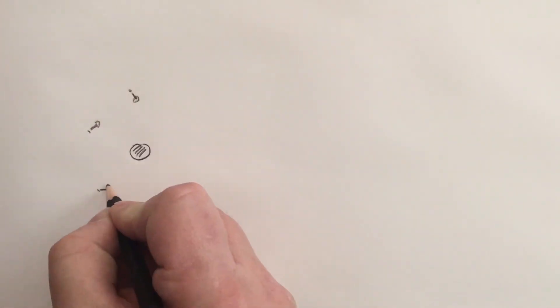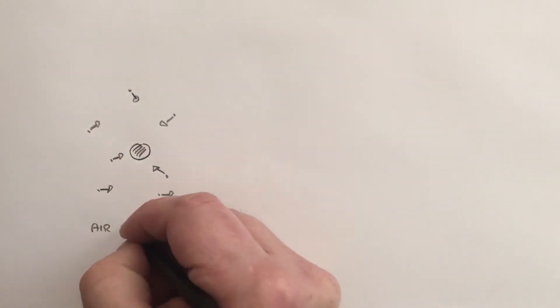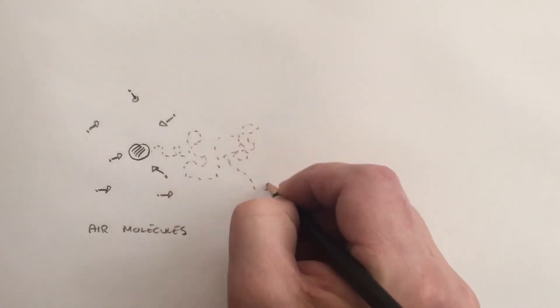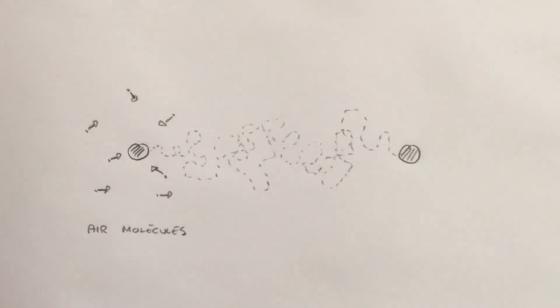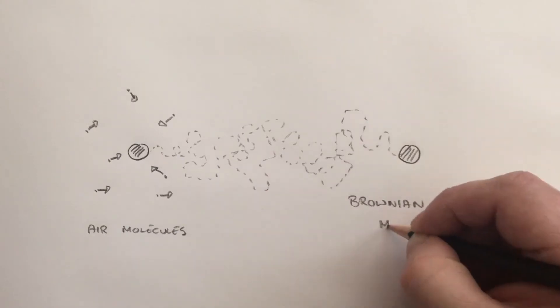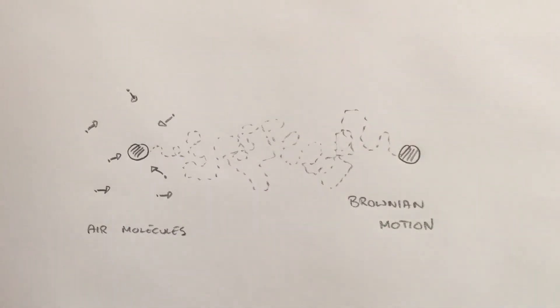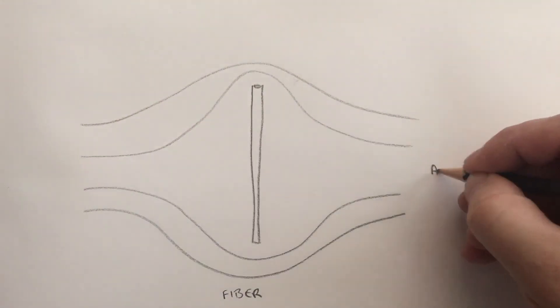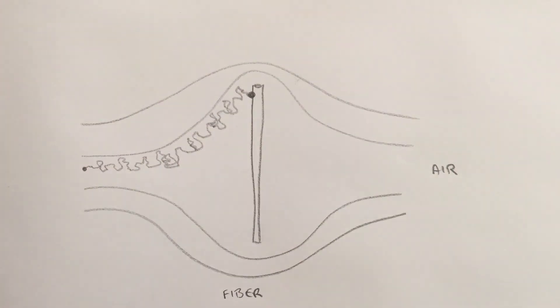Because these particles are so small, they have very, very little inertia, and they dance around as they're bombarded by the air molecules around them. This rather unusual behavior is called Brownian motion after the first person to observe it. And as they dance, they end up colliding with the filter and being captured.